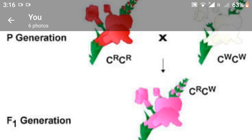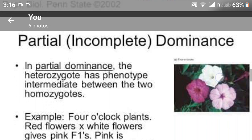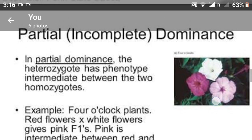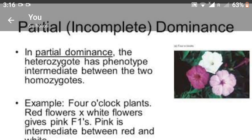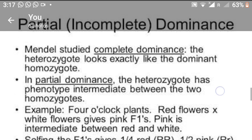Here, genotype and phenotype ratios are the same. The phenotype ratio is one red : two pink : one white. Capital R capital R gives red, capital R small r gives pink, and small r small r gives white. This means that capital R was not completely dominant over small r — this is called partial dominance or incomplete dominance. The heterozygote has a phenotype intermediate between the two homozygotes. Thank you.